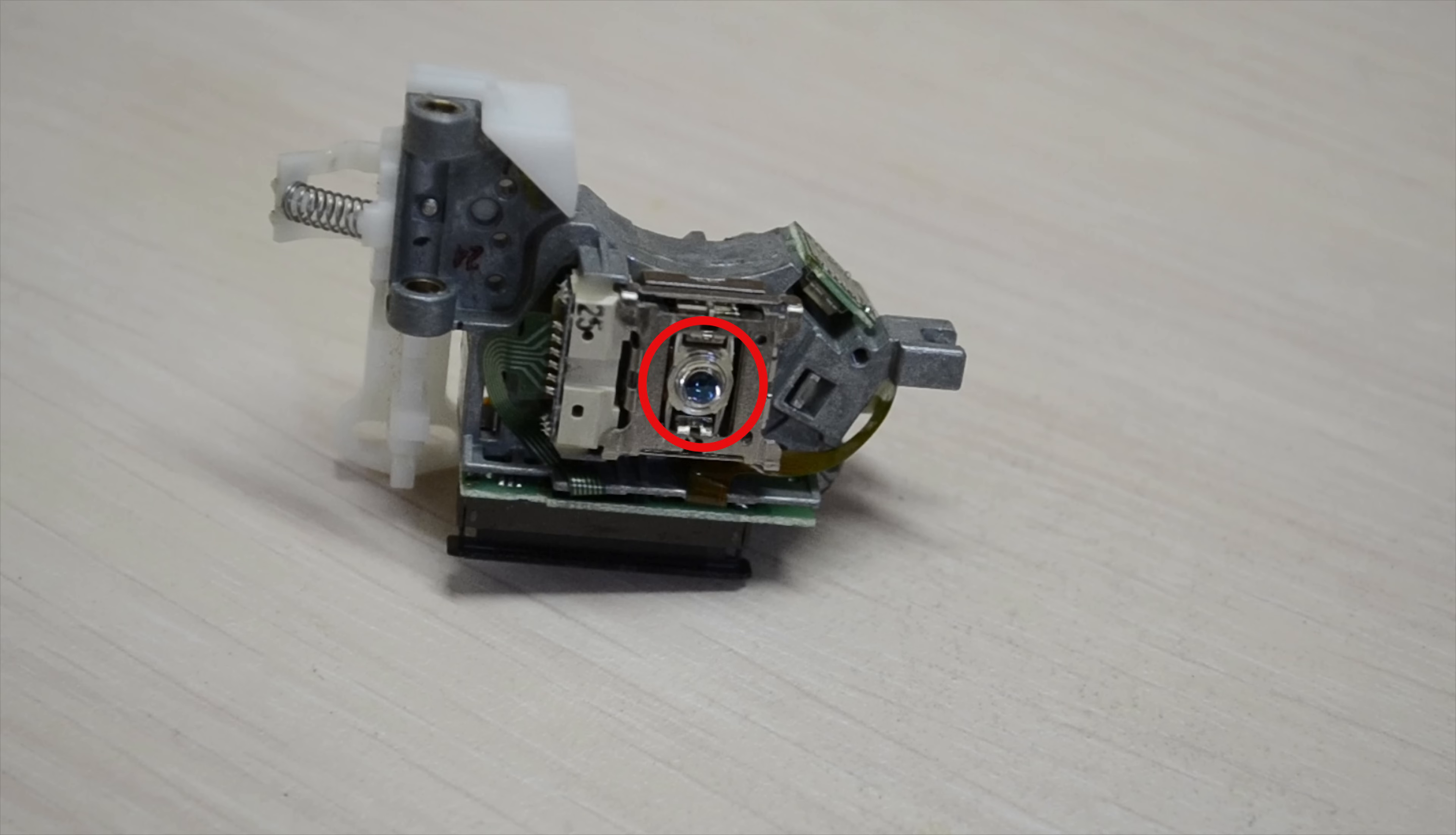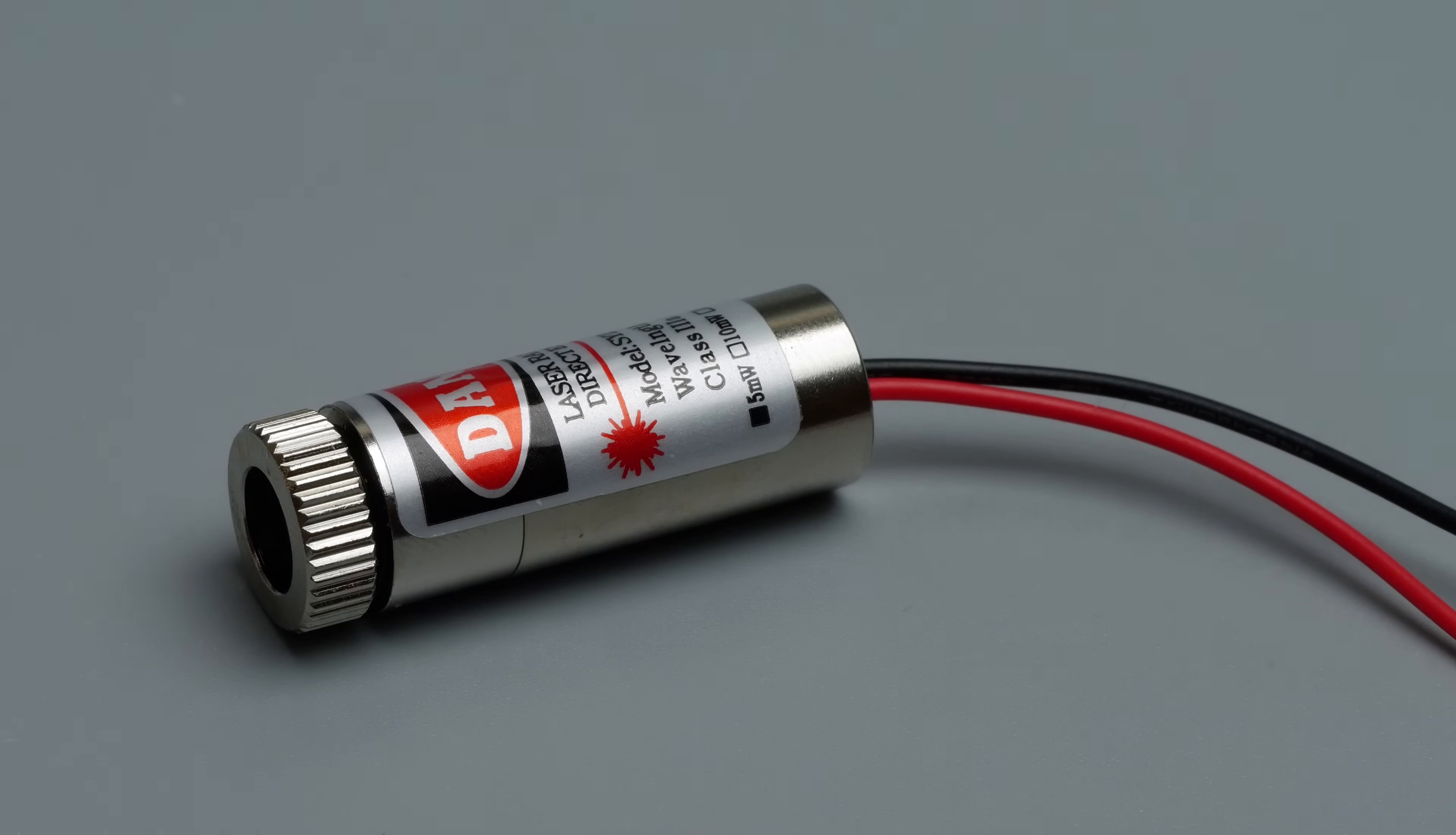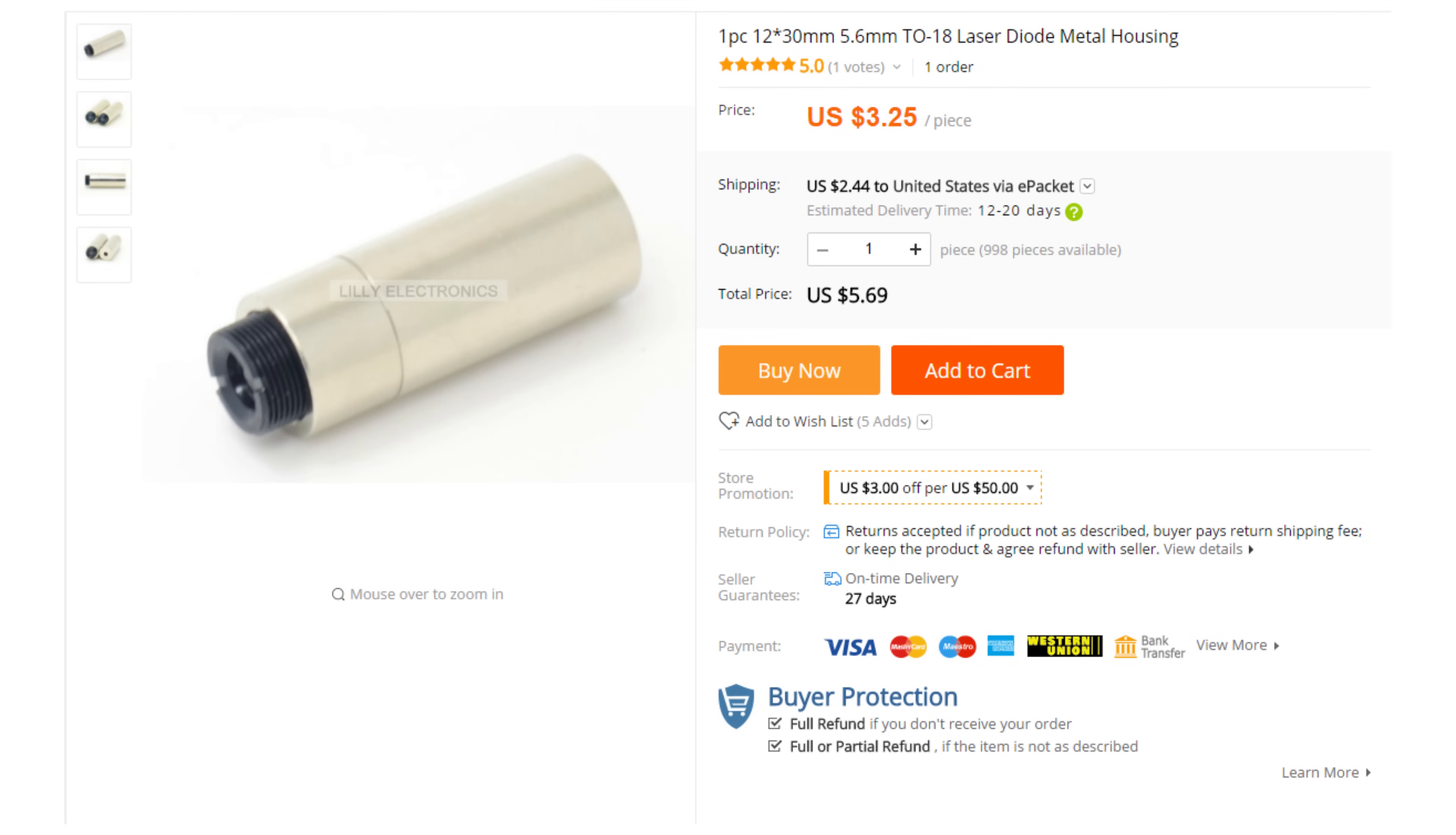As I said before you can use native lenses from DVD, but you'll have to figure out how to fix them. I recommend to buy Aixis housing, pair of dollars will solve all the problems with focusing.